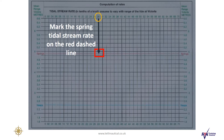Firstly, we mark the spring tidal stream rate on the red dashed line using the scale at the top of the page. We work along until we find our tidal stream rate of 2.8 knots. This is the rate that we will be using.